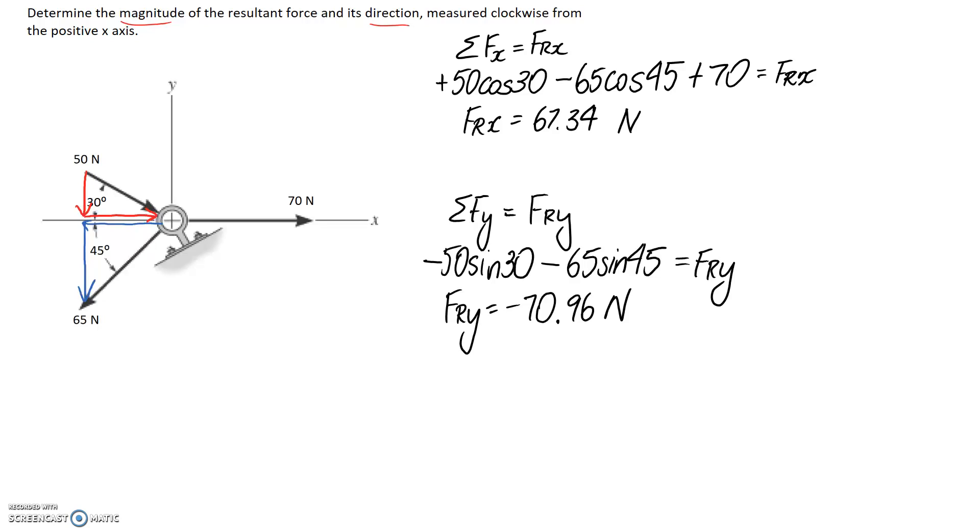Let's draw it out, make a bit of a graphical representation. We know that the x component is positive 67.34, so it's going to be in the positive x direction—67.34 newtons. This one here is going to be in the negative y direction since it's a negative, so it's going to be pointed down.